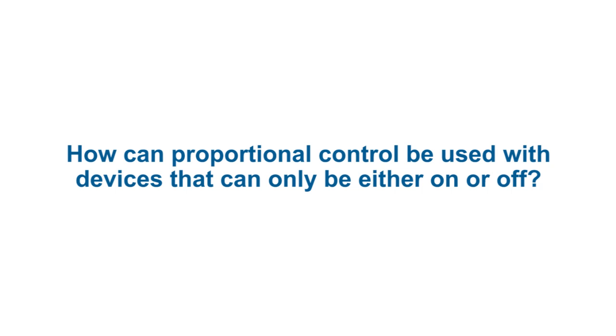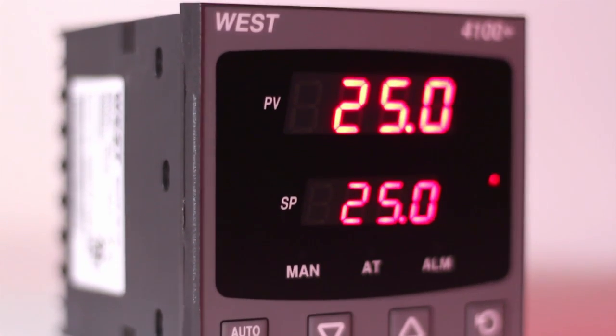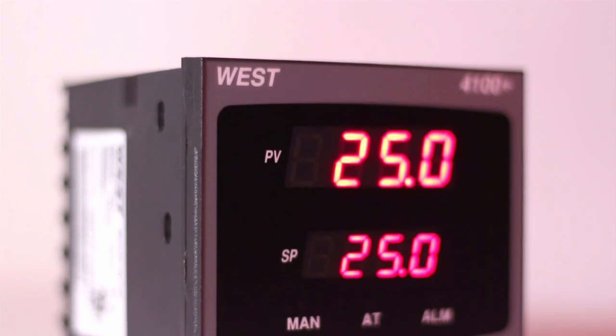The use of proportional control adds stability to the process and allows the user to control how often their output devices, such as relays and contactors, will switch. Many users are confused by the fact that proportional control can be used with relays or solenoid valves — devices that can only ever be on or off. How is this possible?